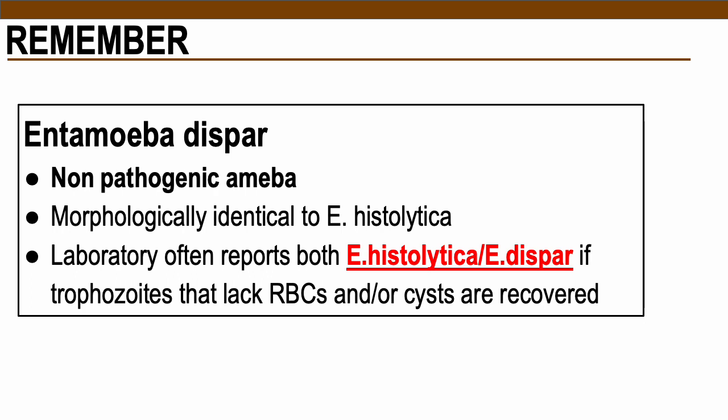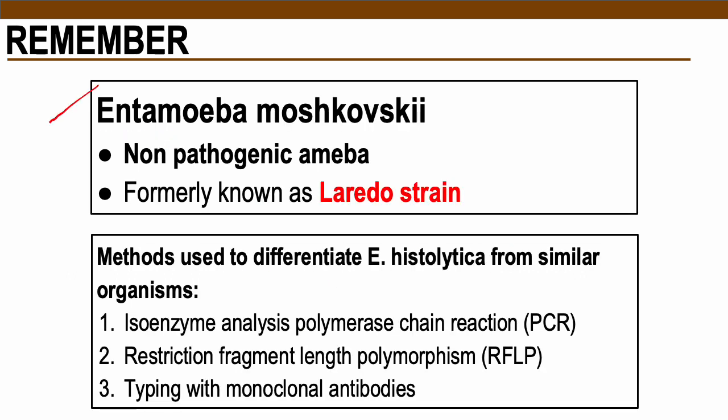A hallmark of Entamoeba histolytica is the presence of RBCs in the cytoplasm of trophozoites. However, Entamoeba dispar is a non-pathogenic amoeba that is morphologically identical to Entamoeba histolytica. Some laboratories report this as Entamoeba histolytica/Entamoeba dispar when trophozoites or cysts do not contain RBCs. Entamoeba moszkowskii is another non-pathogenic amoeba similarly identical to E. histolytica, formerly known as the Laredo strain. To differentiate E. histolytica from similar organisms, PCR, RFLP, and monoclonal antibodies are used.